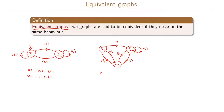Now let us look at the same input sequence 1,0,0,1,1,0 for the second graph, assuming we start in state S1. The output sequence is: first a 1 and we go to state S2, then we stay in state S2 with a 1 for both 0 inputs, then with input 1 we output a 0 and go to state S3, then with input 1 we go back to state S2 with a 1, and finally the 0 lets us stay in state S2 with a 1 as output.